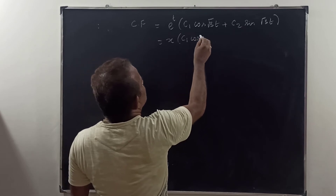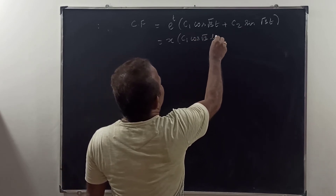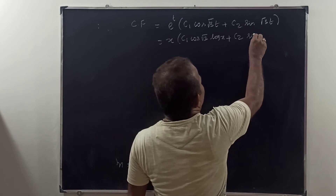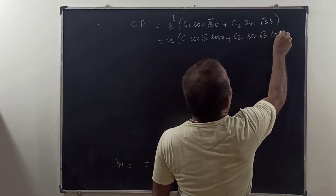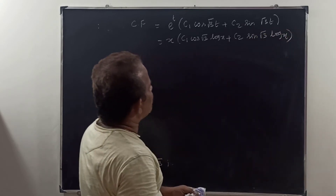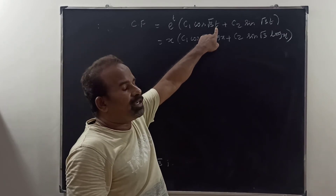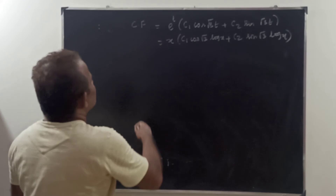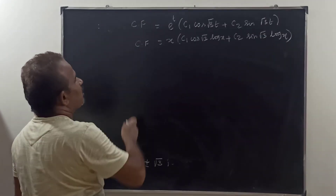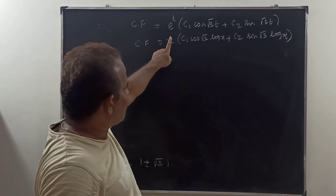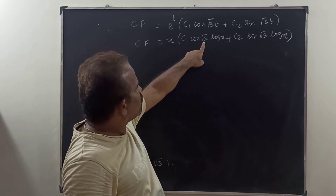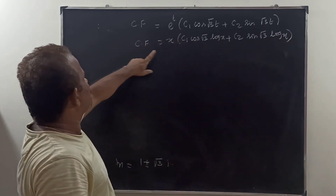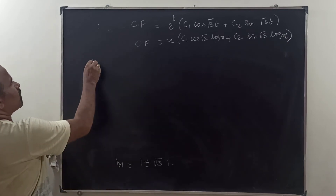Since the roots are complex with α equals 1 and β equals √3, the complementary function is e^t times (c₁ cos(√3 t) plus c₂ sin(√3 t)). Since e^t equals x and t equals log x, the complementary function is x(c₁ cos(√3 log x) plus c₂ sin(√3 log x)).